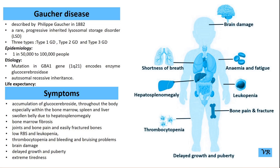Gaucher disease is a rare inherited metabolic disorder that results from the deficiency of an enzyme called glucocerebrosidase, also known as acid beta-glucosidase. This enzyme is crucial for the breakdown of a fatty substance called glucocerebroside.